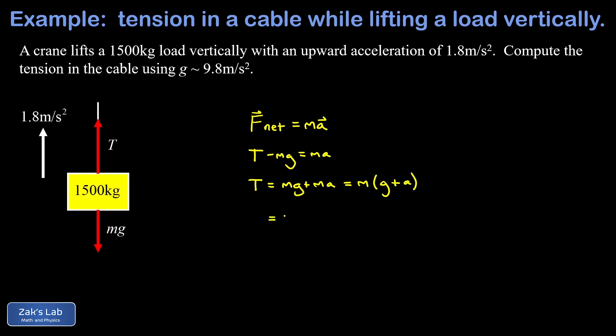All that's left for us to do now is plug in the numbers. So we have our 1500 kilogram mass, we're using the approximation that g is 9.8 meters per second squared, and we were told that our upward acceleration is 1.8 meters per second squared. Now when I run the numbers on this to three significant digits, I get 17,400.